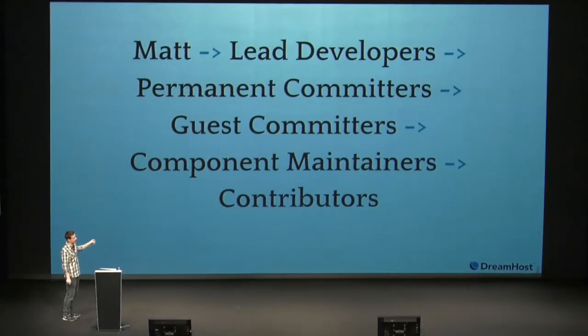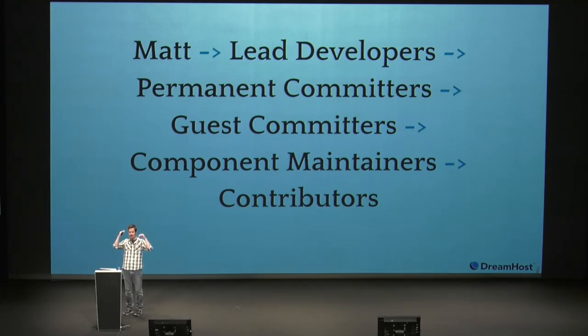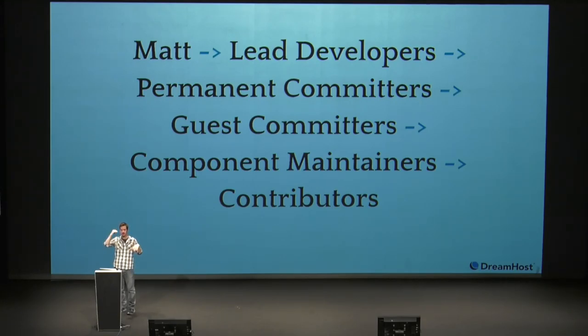There is a structure to WordPress, and on this rather messily laid out slide you can see generally how it works. You have Matt, who is the project lead, five lead developers, followed by the permanent committers, guest committers - who are really more trial committers - followed by the component maintainers, and of course all of the contributors. This also doesn't include the release lead, who has the final say over what goes into any particular release.